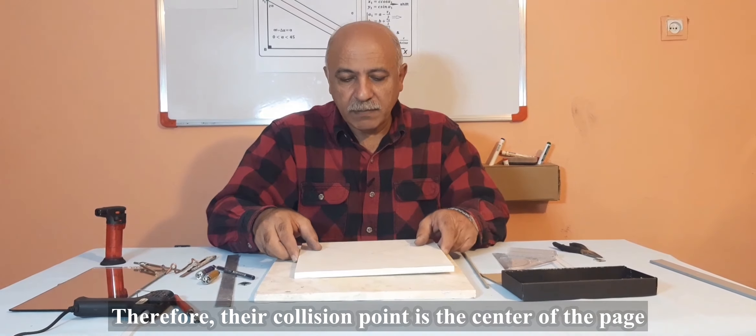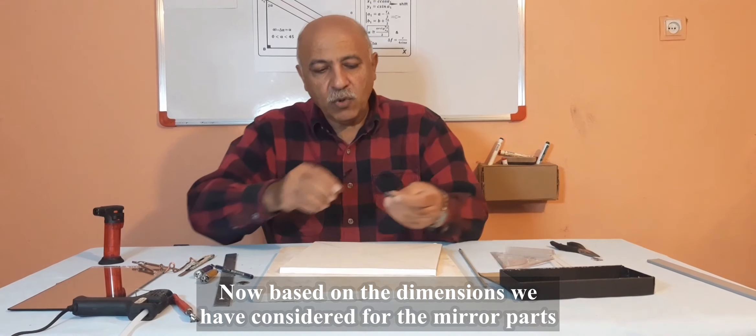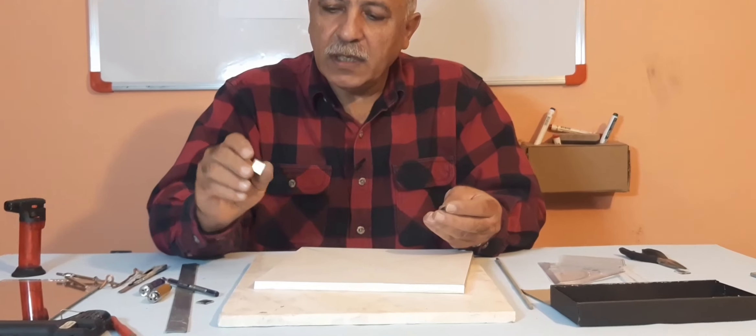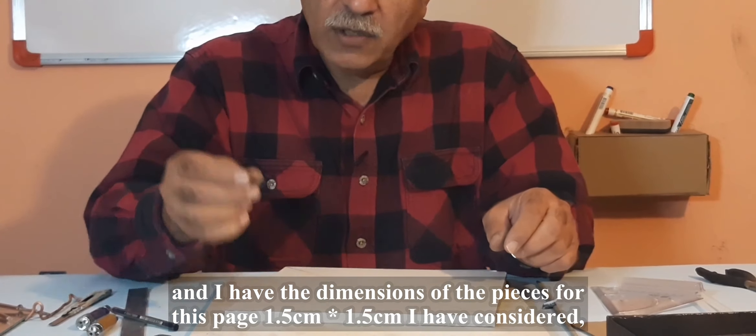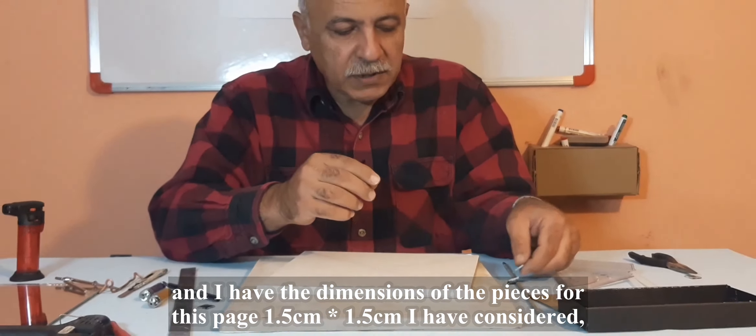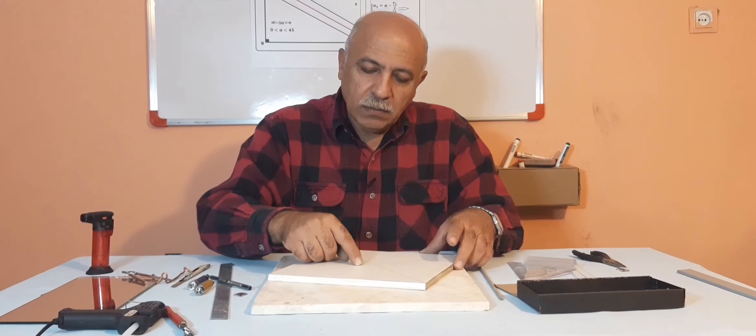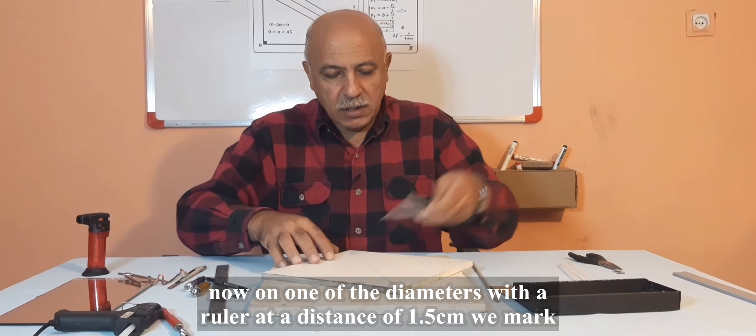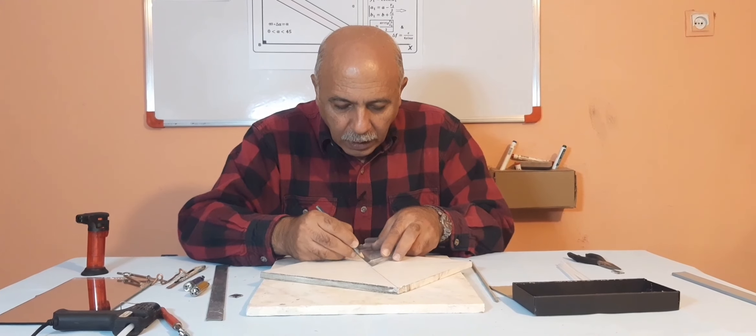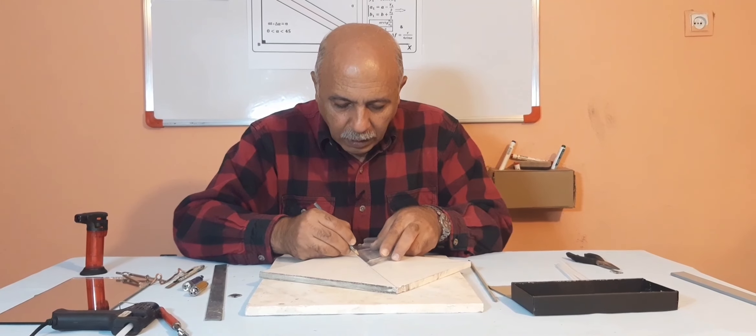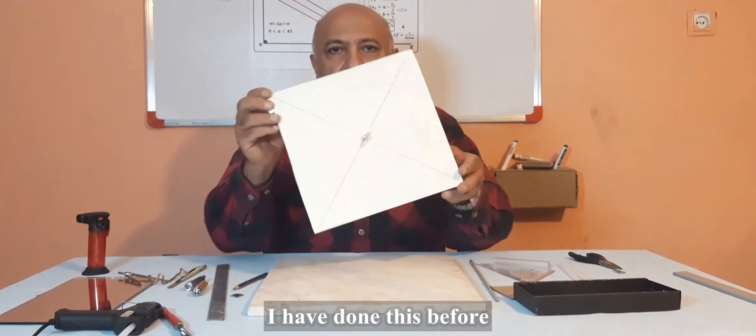Now based on the dimensions we have considered for the mirror parts, we divide the page. I have dimensions of the pieces for this page at 1.5 centimeter square. Now under one of the diameters with a ruler at a distance of 1.5 cm, I use a compass to draw a circle. I have done this before.